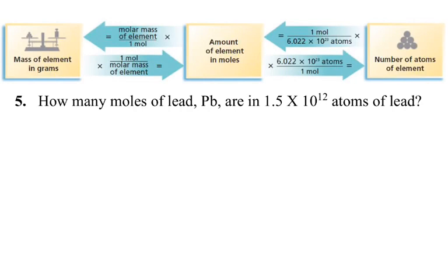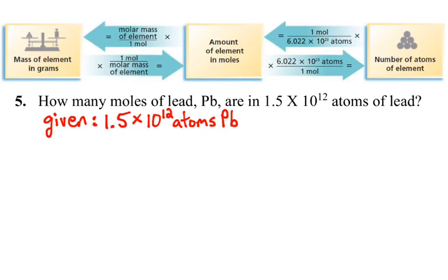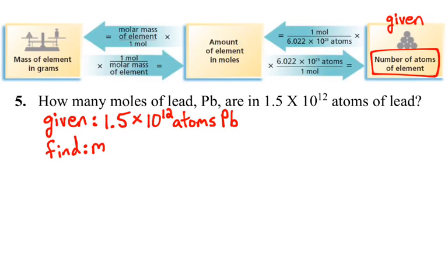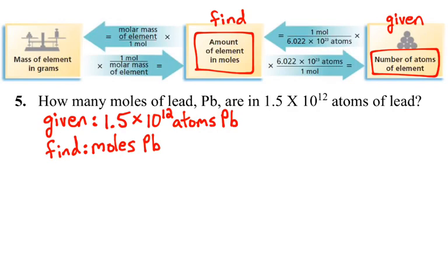Like every one of these problems, it is helpful to write out what we are given. We are given 1.5 times 10 to the 12 atoms of lead. If we refer to this diagram provided by our textbook, we see that we have a place for the number of atoms of an element — so we are given the number of atoms — and we are asked to find the number of moles of lead.